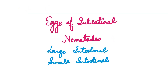Next we move on to the eggs of intestinal nematodes — we're going to study the large intestinal nematodes, Enterobius vermicularis and Trichuris trichiura, and small intestinal nematode eggs like Ascaris, the hookworms, and Strongyloides. Let's start with Ascaris lumbricoides, the longest roundworm found in the human intestines.